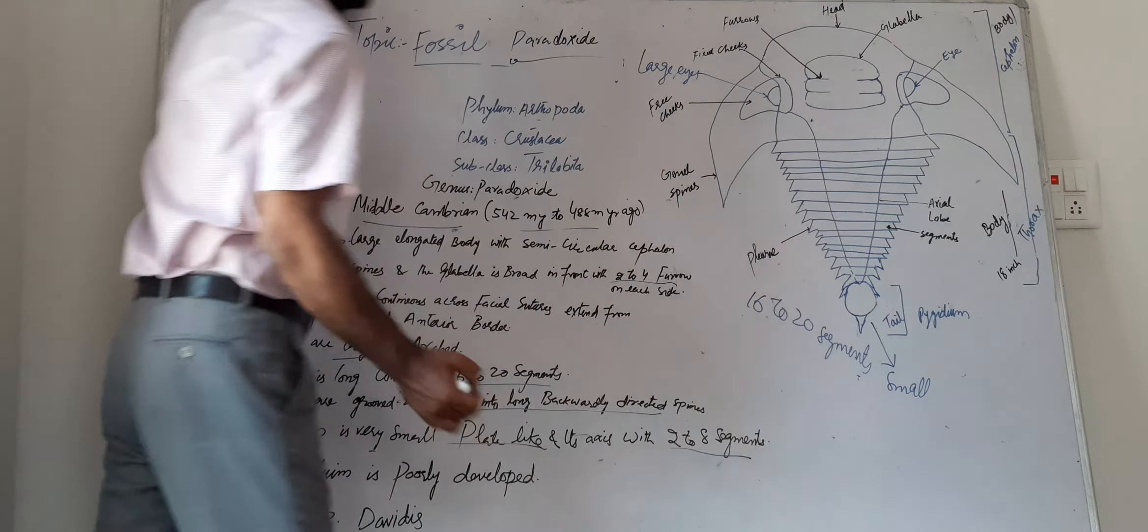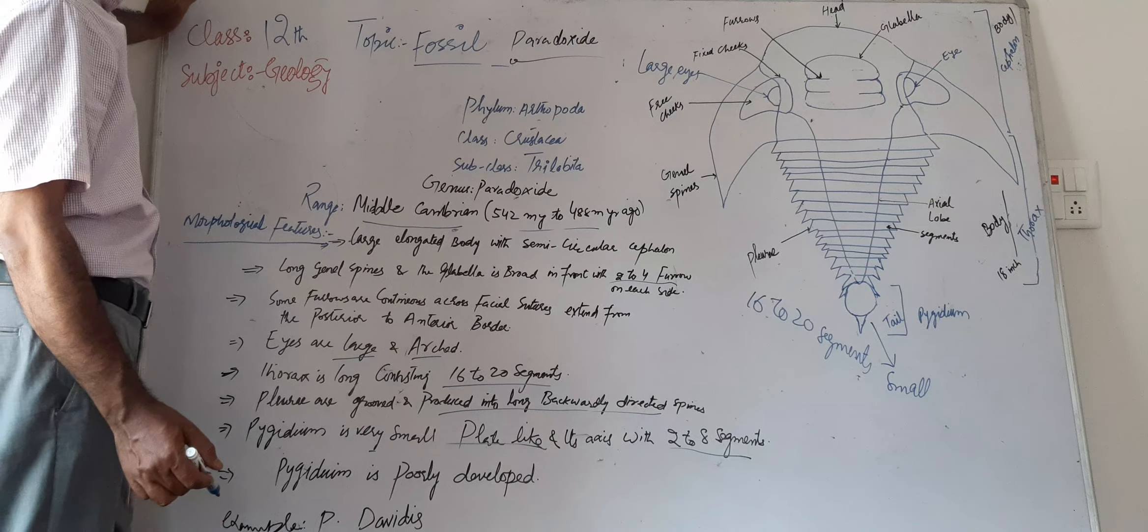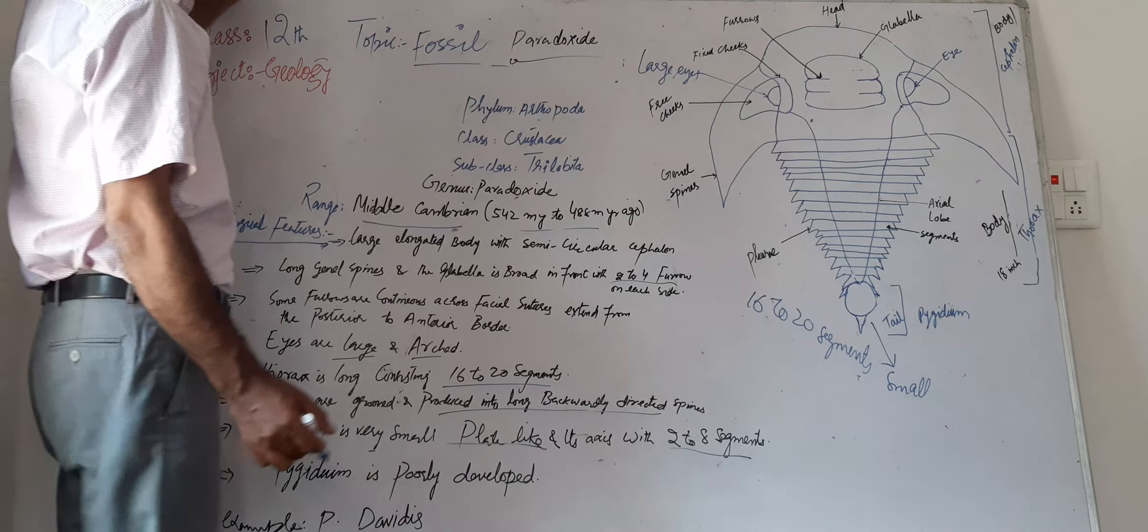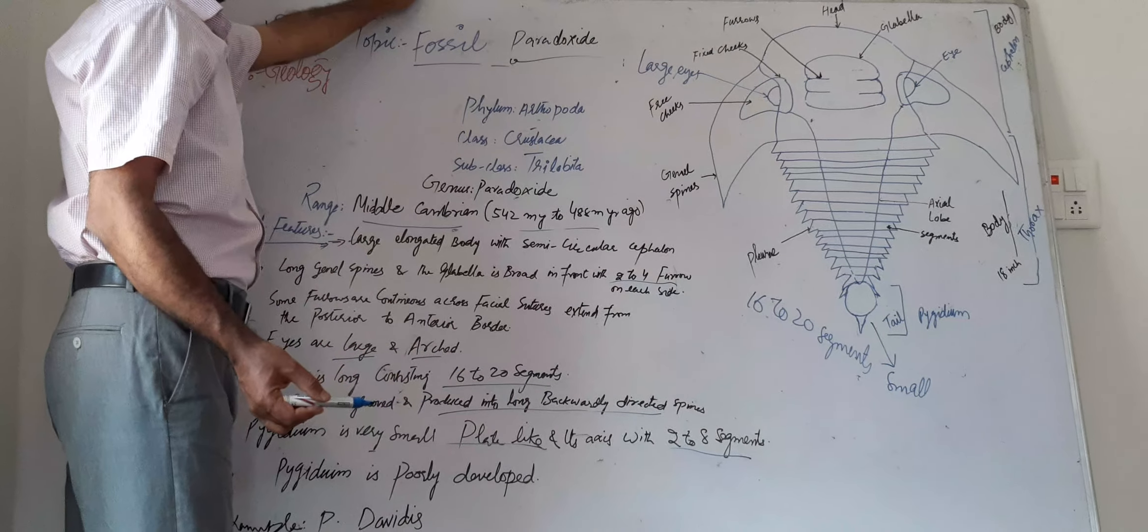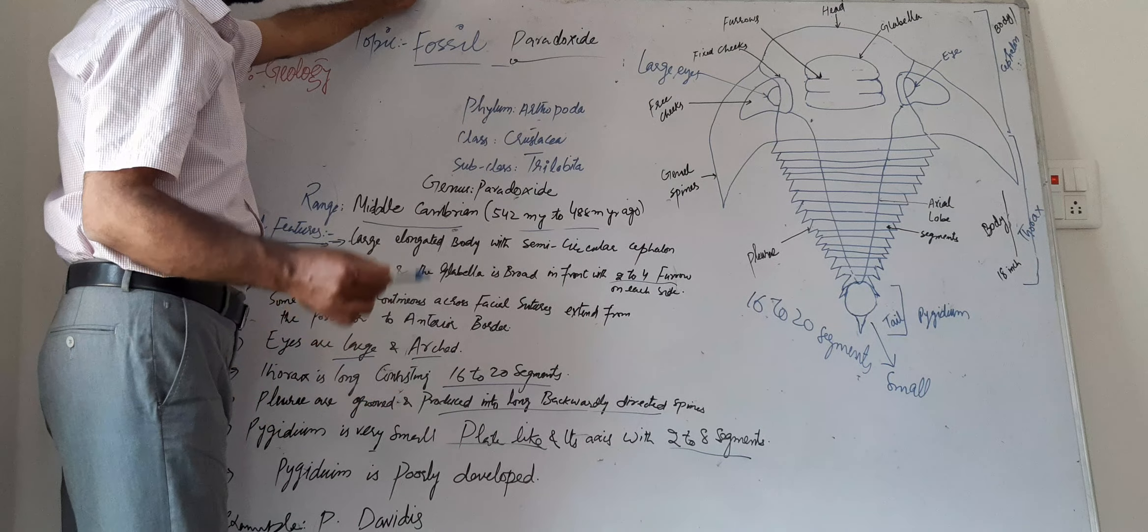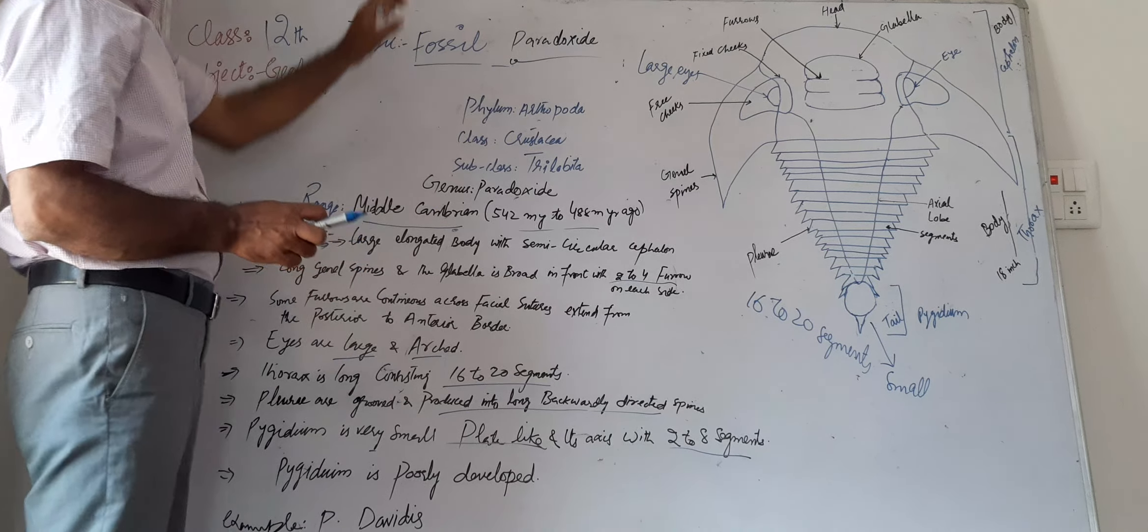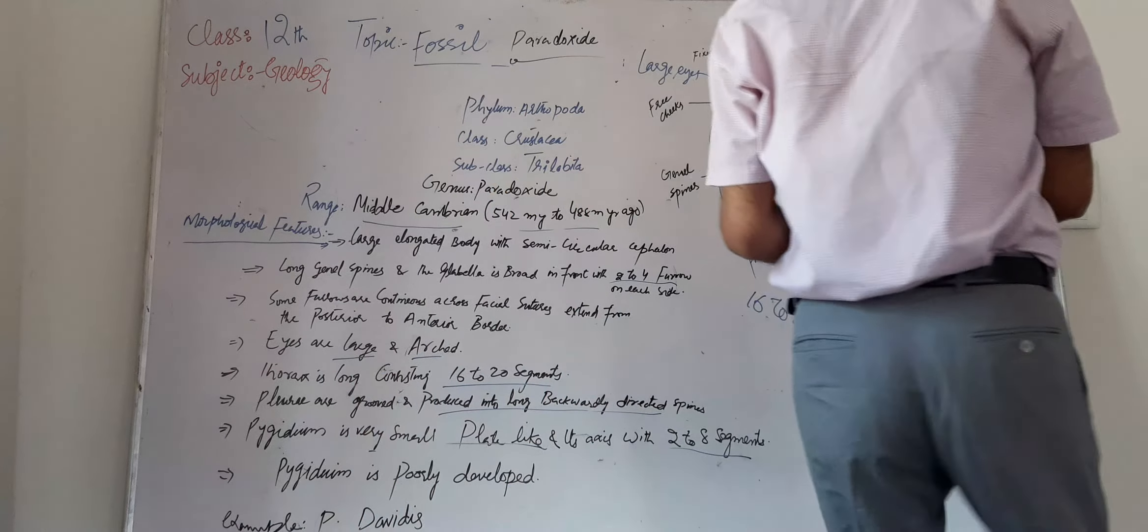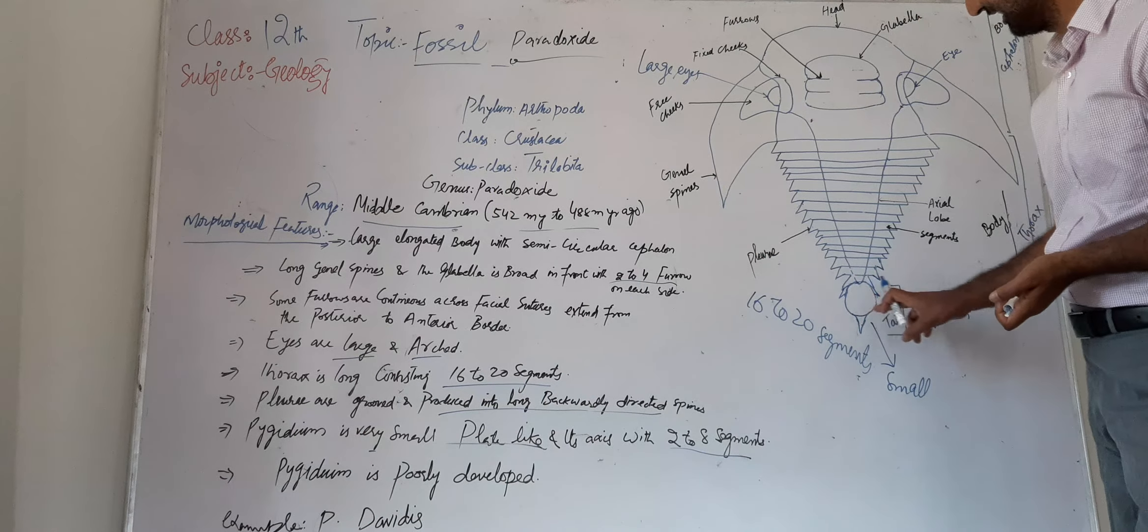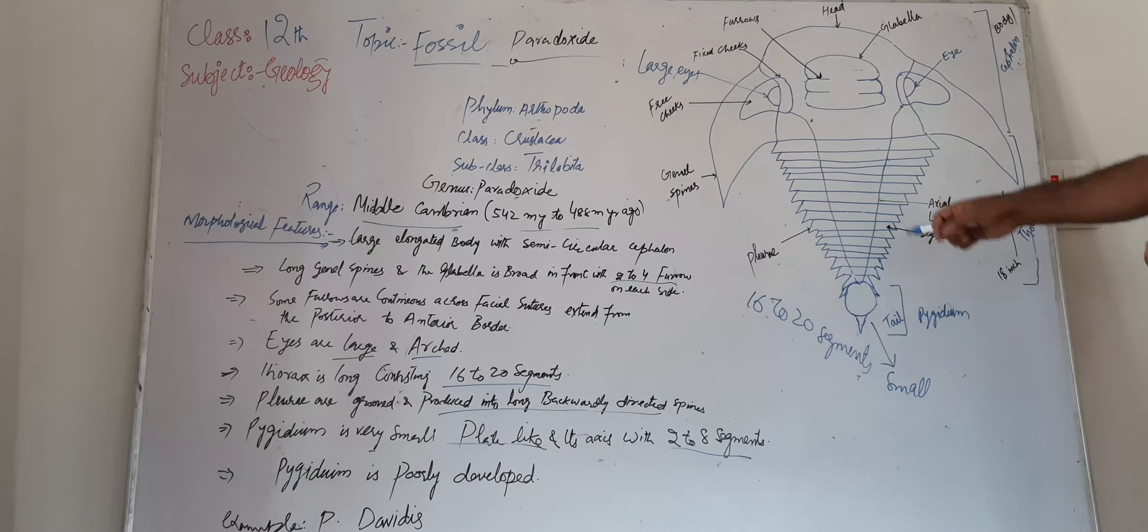The pygidium is very small, just like the shape of a pallet. It has only 2 to 8 segments, and the tail is poorly developed. That is why this pygidium part is not clearly visible because the development of the tail, which is pallet-like structure, is not clearly visible.